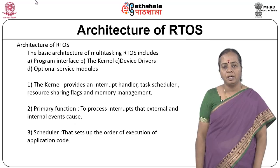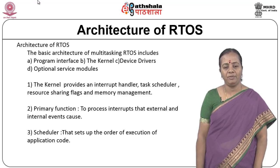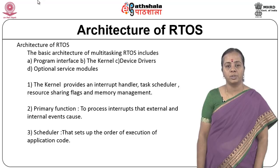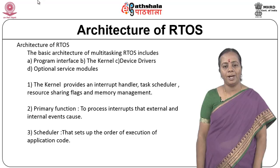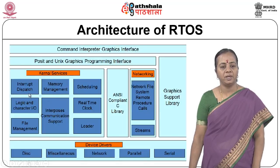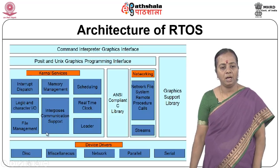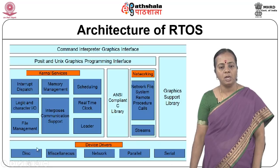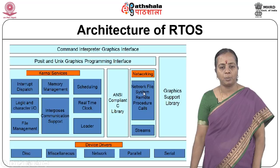The example of hard real-time is the flight control system. When looking at RTOS, we need to know the architecture. The basic architecture of a multitasking RTOS includes the program interface, the kernel, device drivers, and optional service models. The kernel provides the interrupt handler, and within the kernel we have interrupt dispatch, memory management, scheduling, real-time clock, file management, inter-process communication, logic and character IO, and loader — all available as kernel services.